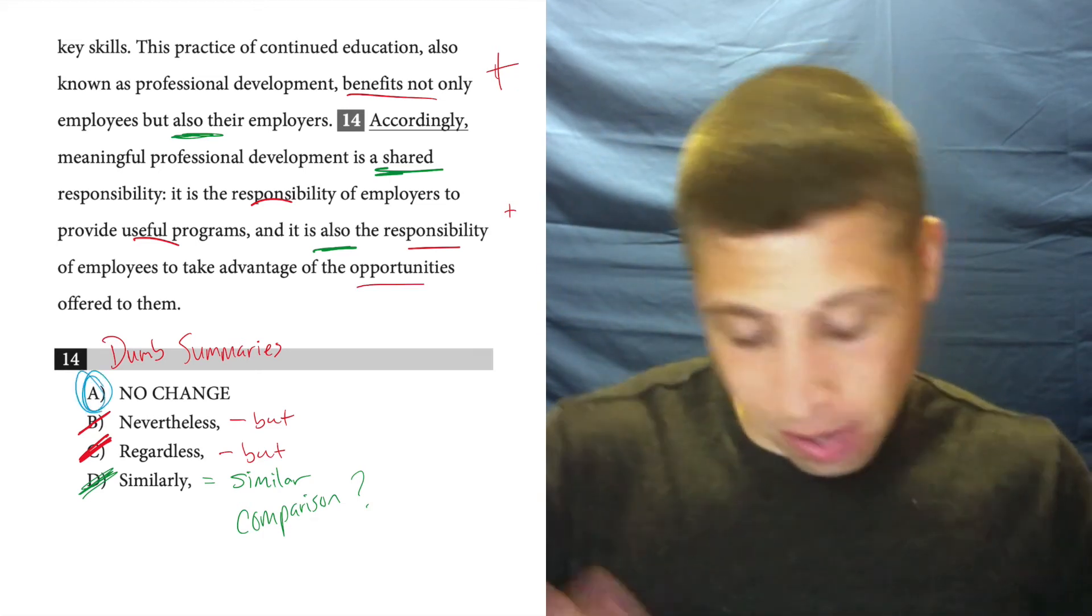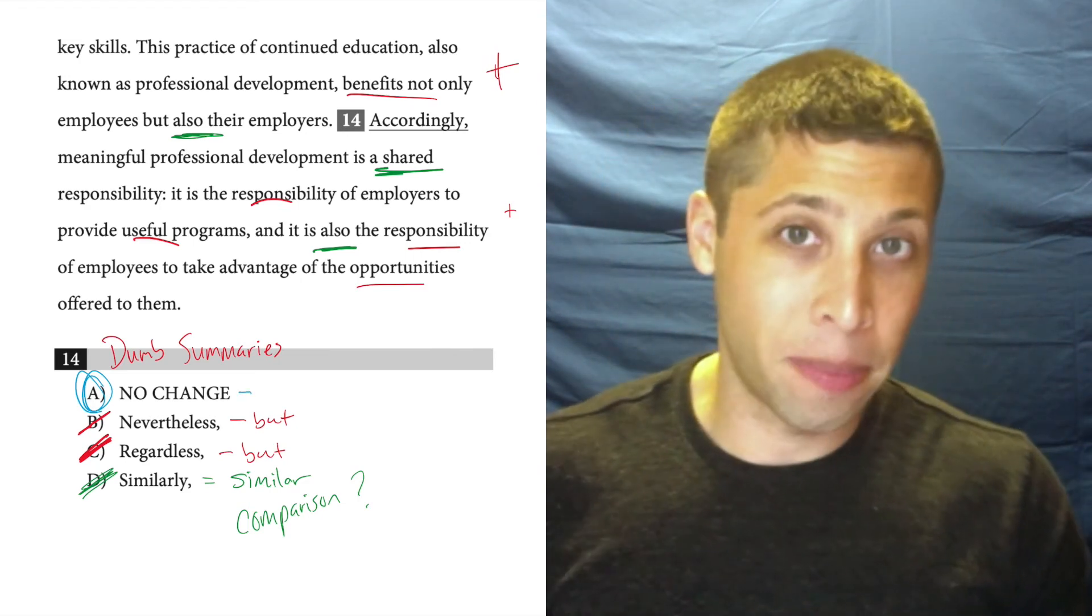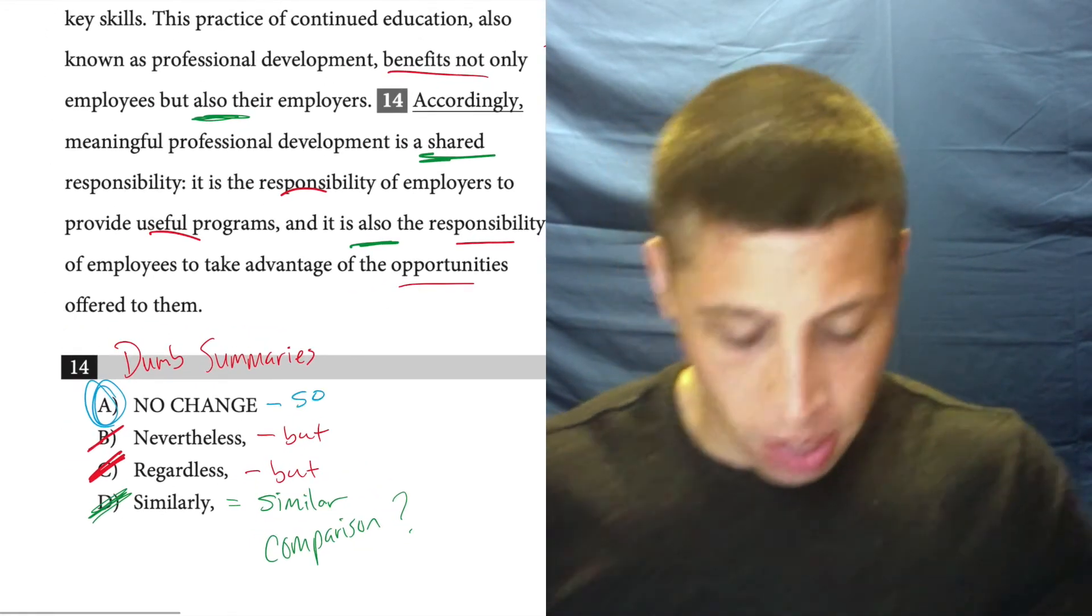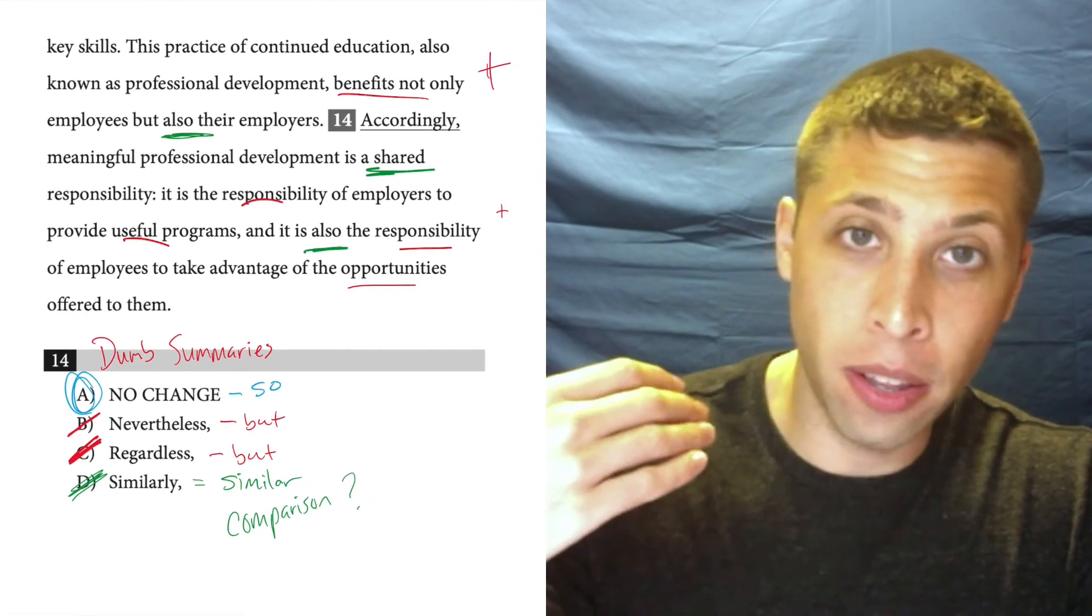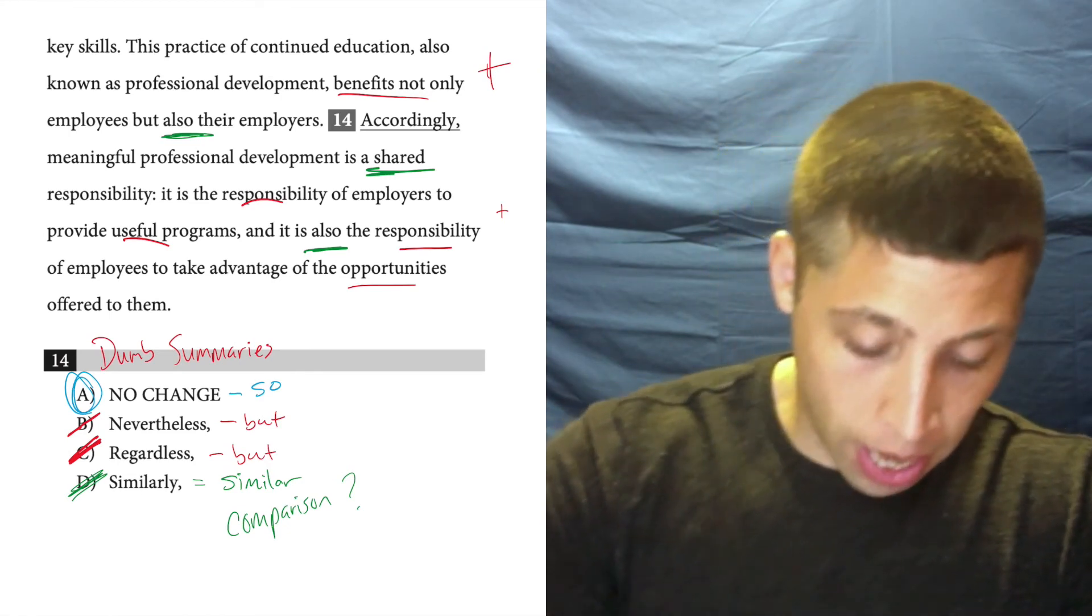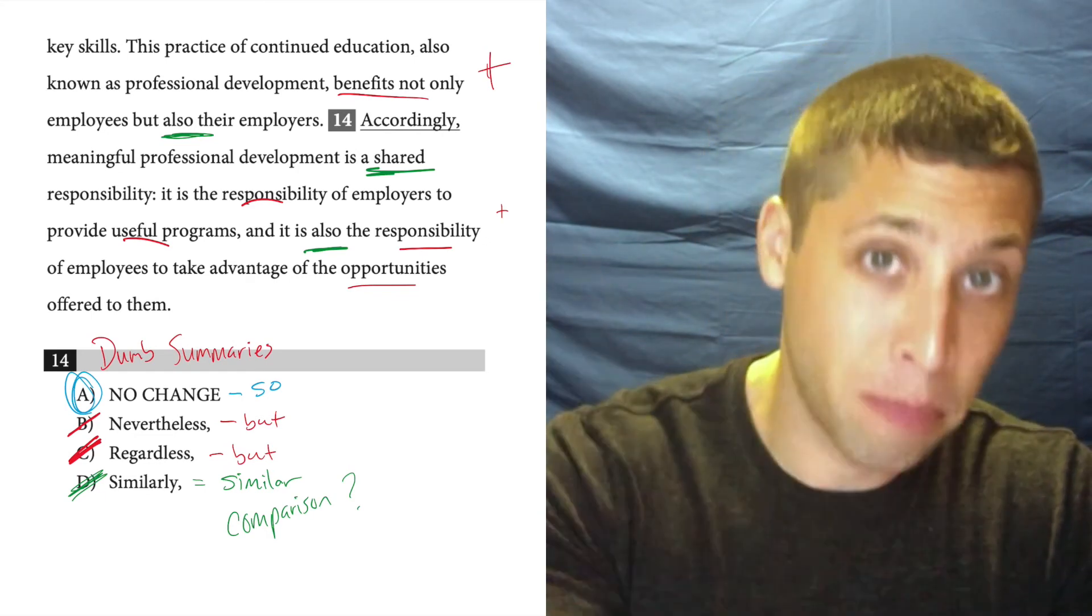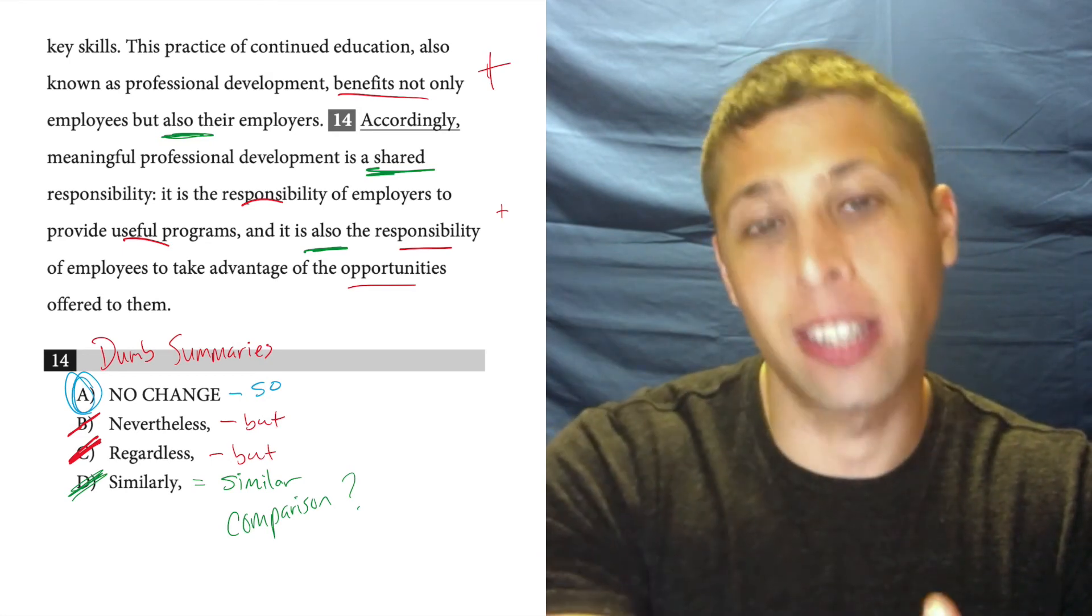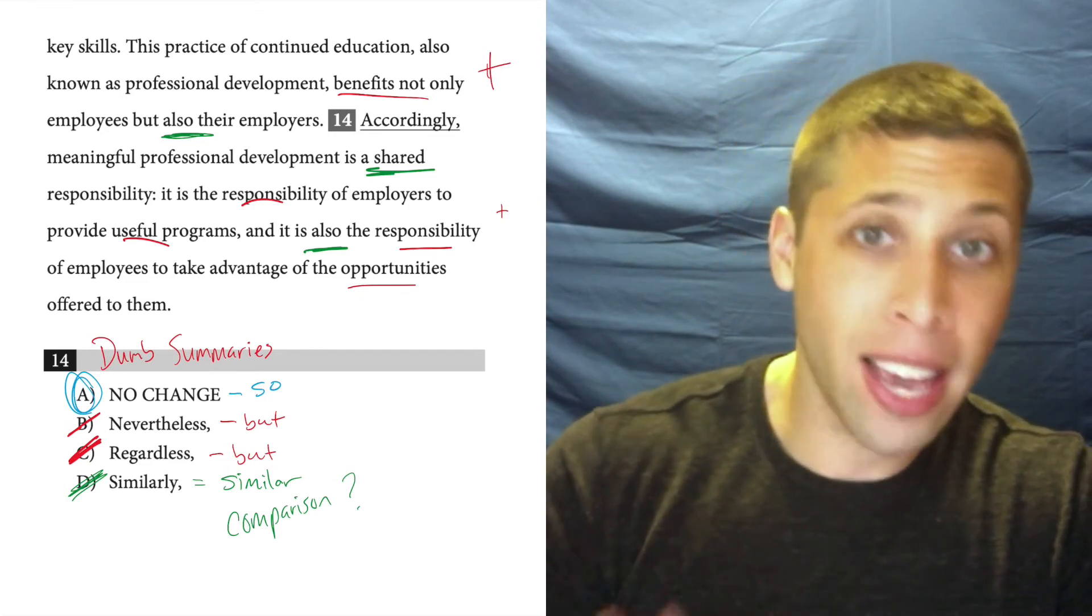Now, why? Well, what does it mean? Let's focus on that. So accordingly kind of means something like therefore, or so maybe is our simple word here. And that makes sense with what we have because they're introducing an idea. There are benefits for employees and employers. So if there's benefits for both, there are responsibilities for both. So it is kind of a continuous and continuing idea, but there's this idea of cause and effect. And so that's how I get this answer.